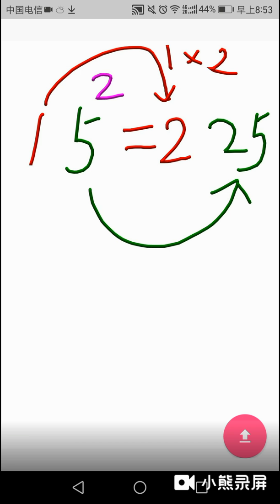Then, the left part is equal to 1 plus 2. 1 comes from the left part of 15. The 2 comes from 1 plus 1. So, the square of 15 is 225.